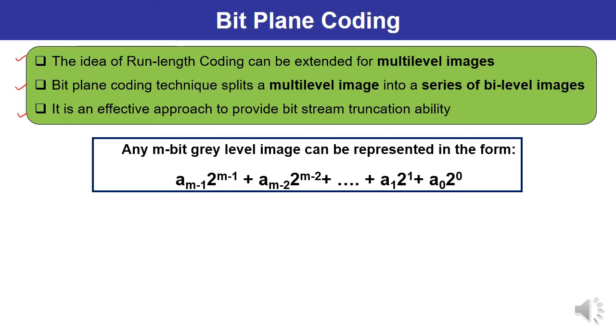Any m-bit grey level image can be represented in the form: a(m-1)×2^(m-1) + a(m-2)×2^(m-2) + ... + a1×2^1 + a0×2^0. If there are m bits, we can represent it starting from 0 to m minus 1. So any grey level image can be represented this way if it consists of m bits.